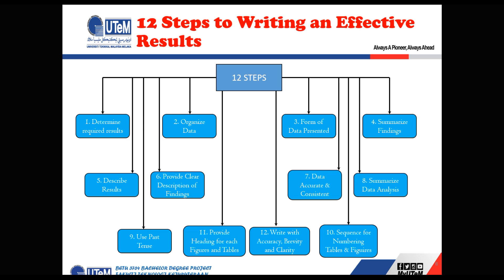The second step is to organize the data — how you achieved the results and what the results are. You have to organize the data so it effectively shows the output of the project. The third step is the form of data presented — whether it is tabulated data, tables, figures, charts, or graphs. You have to select a suitable form of data that clearly shows the output. The fourth step is to summarize findings in a proper and clear manner. The fifth step is to describe the results clearly, as you have good understanding of the project.